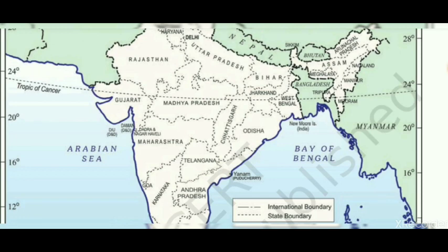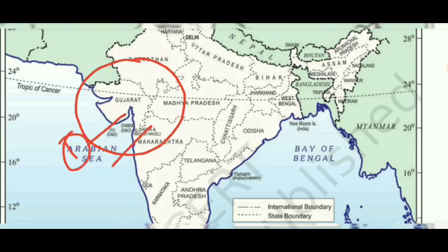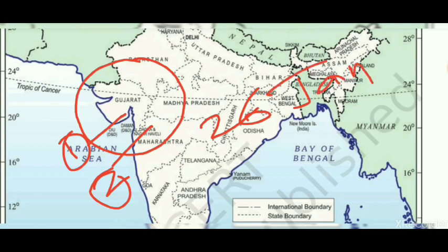To find the answer, we focus on Daman and Diu and Dadra and Nagar Haveli. These two were combined into a single Union territory from 26th January 2020. This was mainly done to reduce administrative costs. So that is how India has eight Union territories.